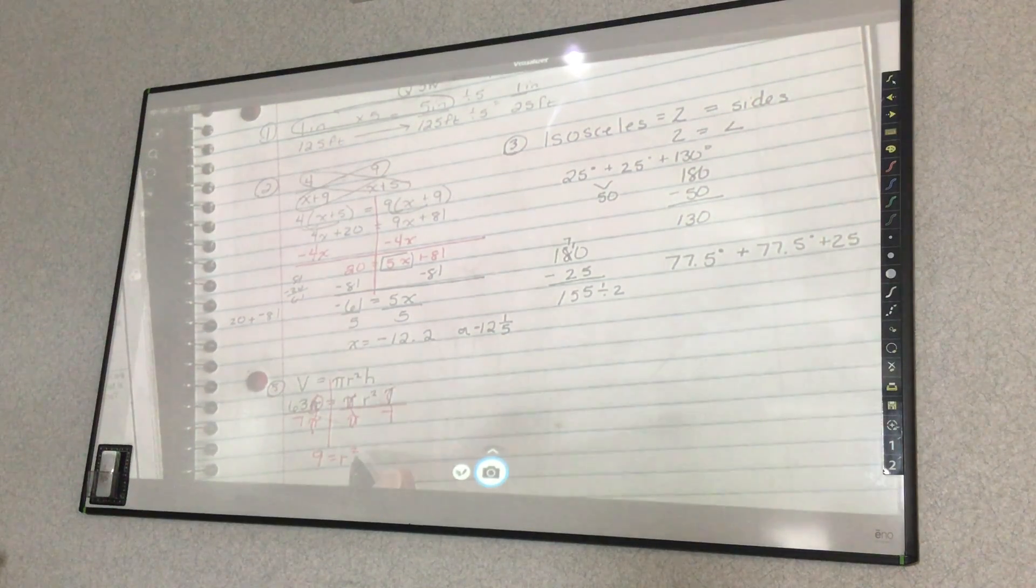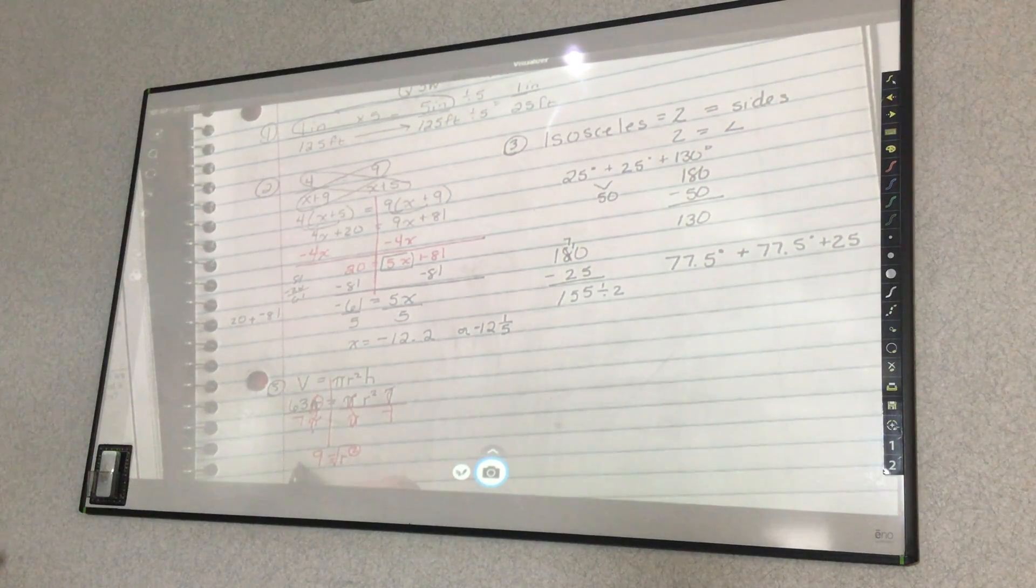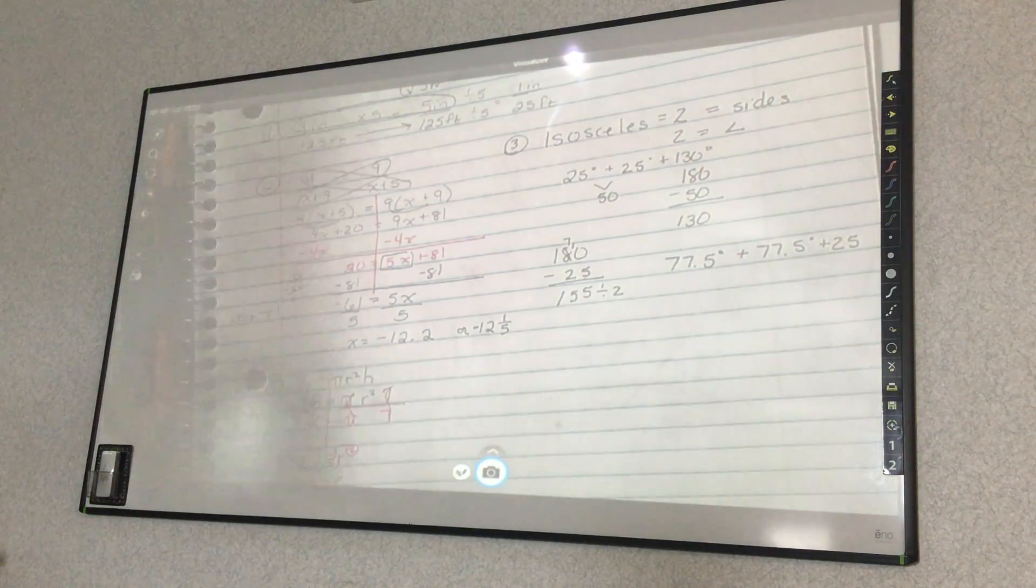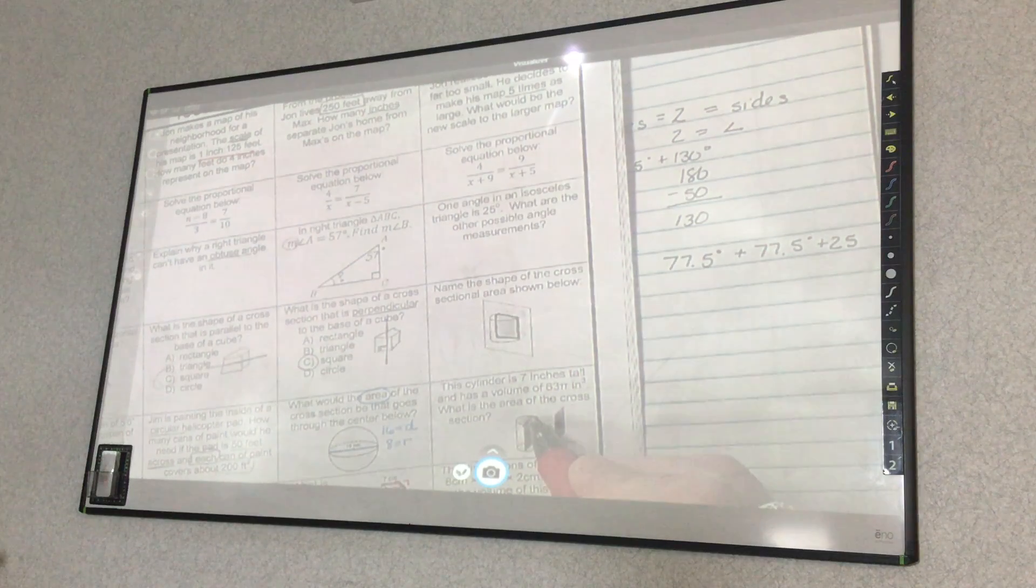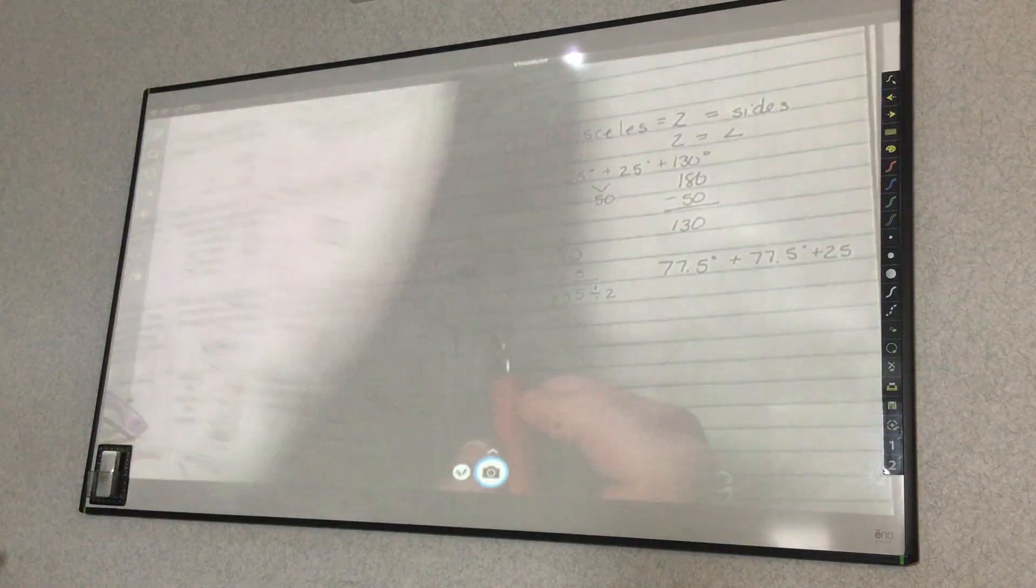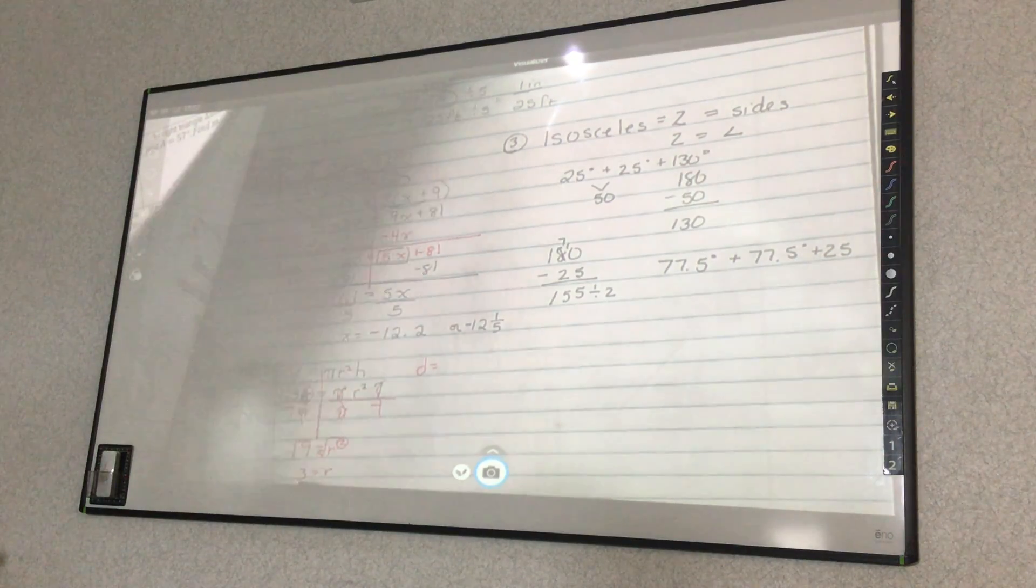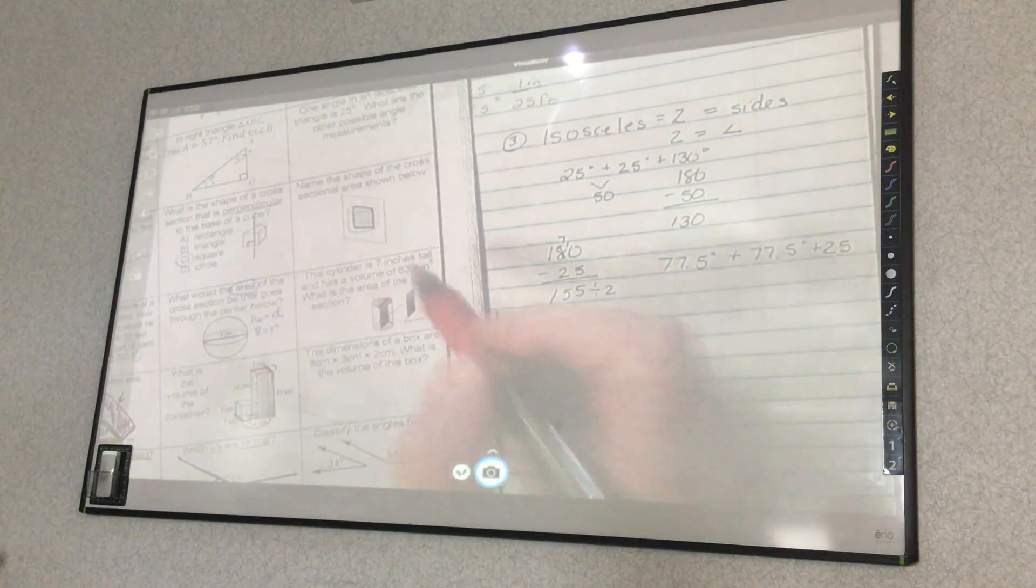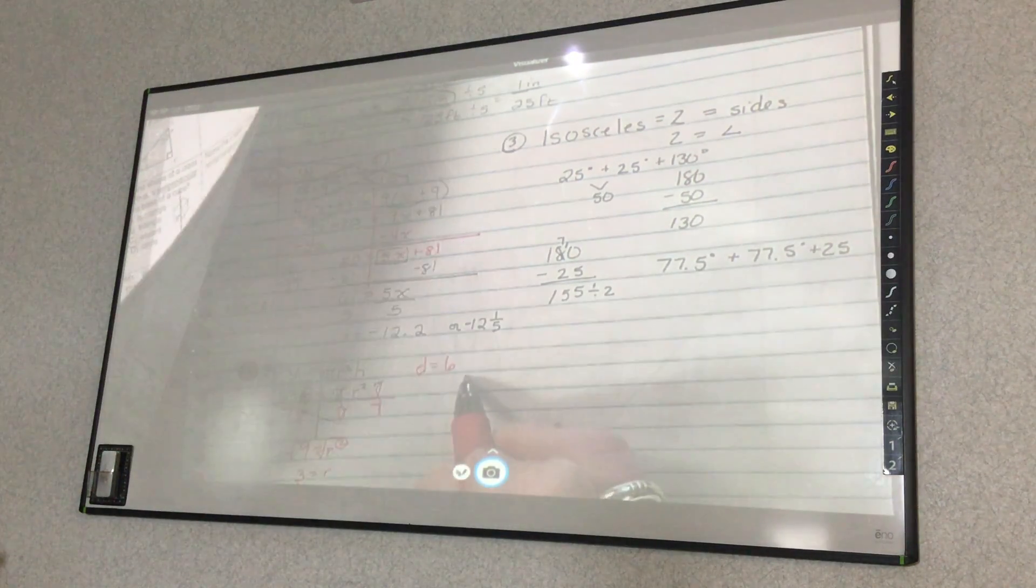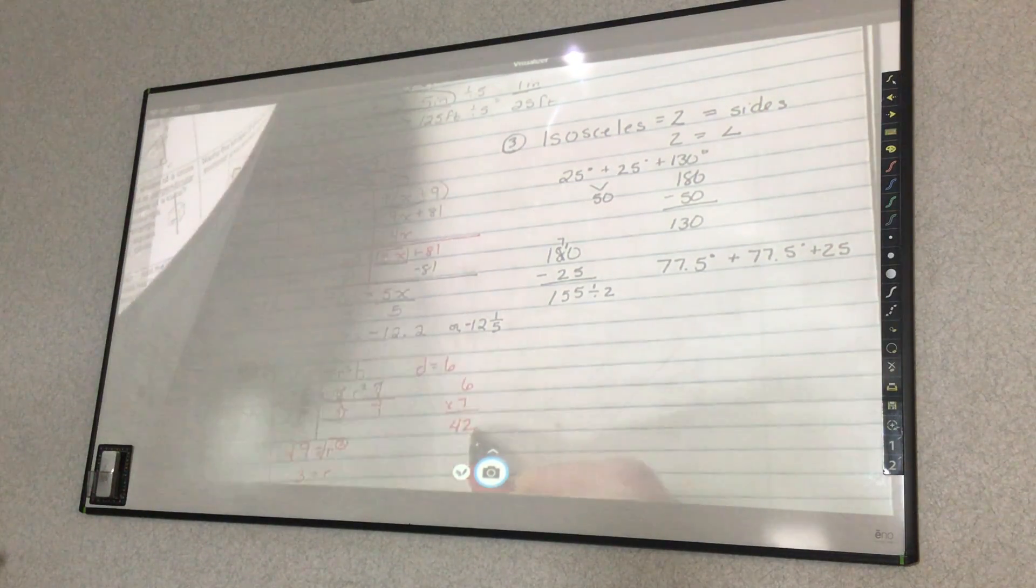So nine equals r squared. So then, how do I get the squared part off? You do the square root. So three equals my radius. But if I'm trying to find this cross-section, I don't need the radius. I actually need the diameter, the whole thing. So what is three plus three? So the diameter is six. So to find the area, it would be six times seven. So six times seven is 42 inches squared.